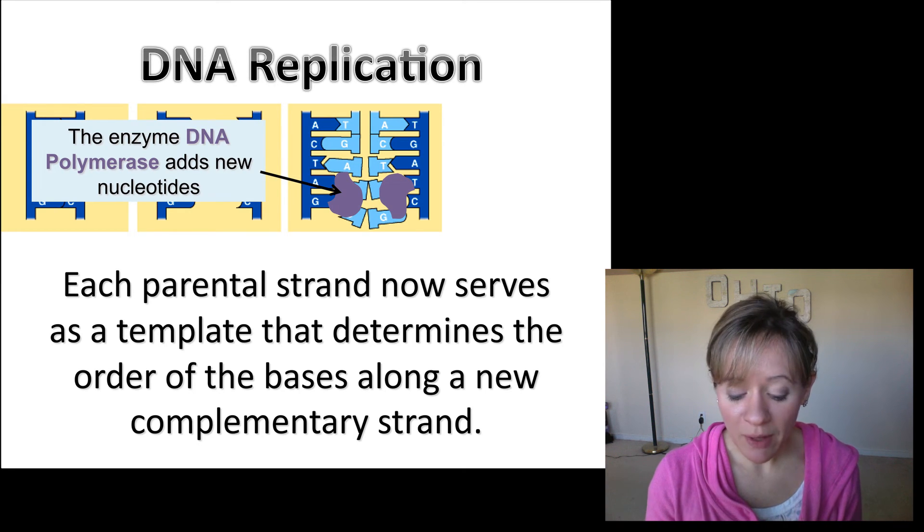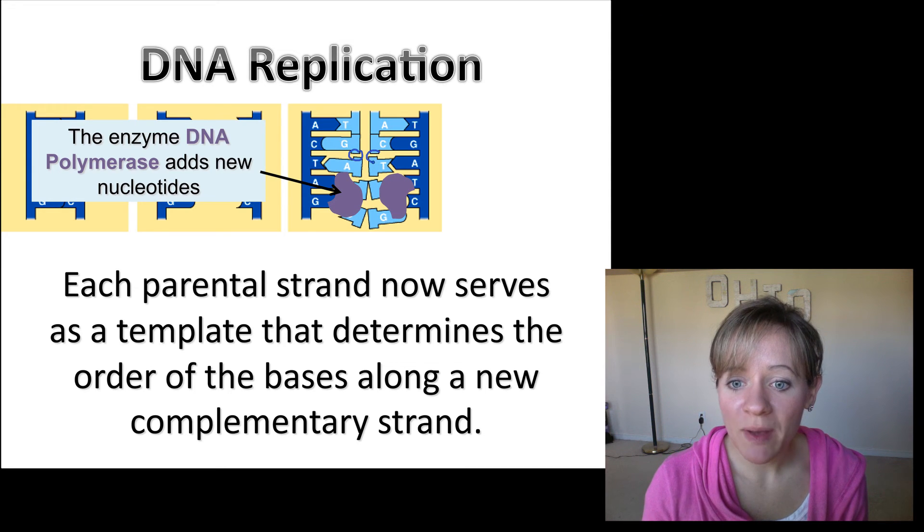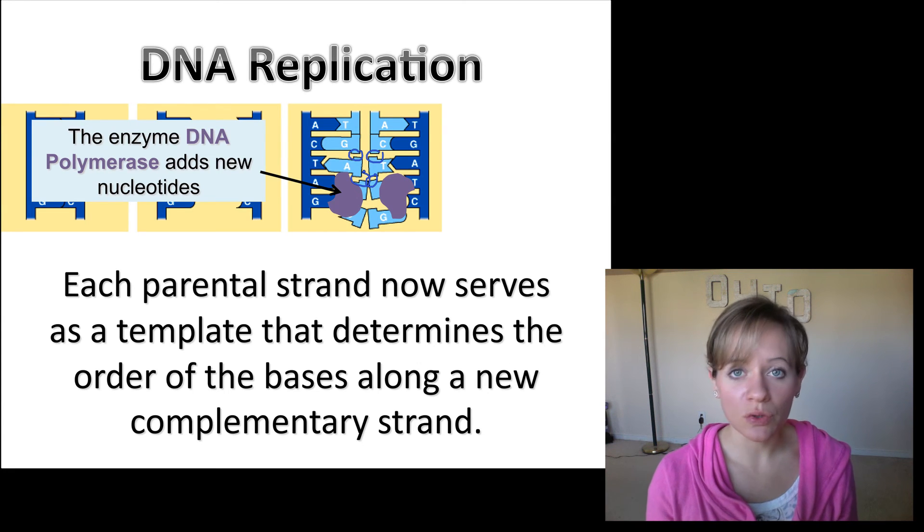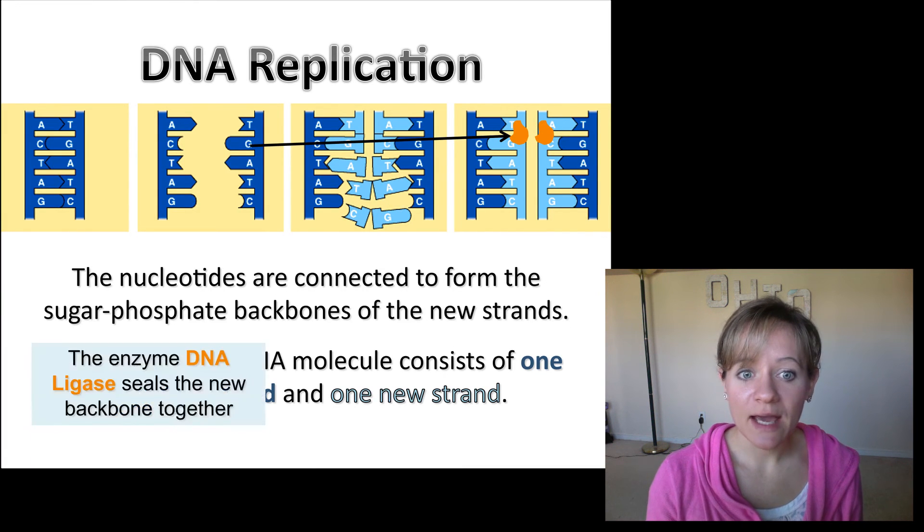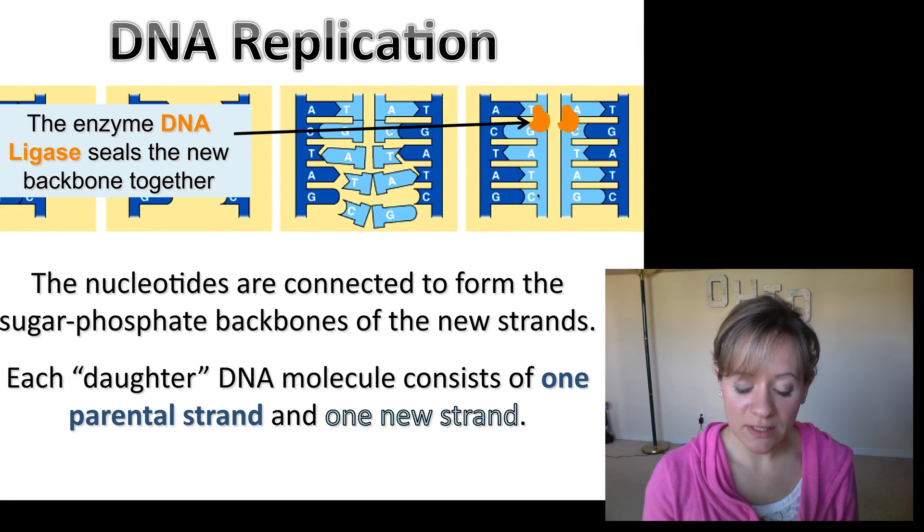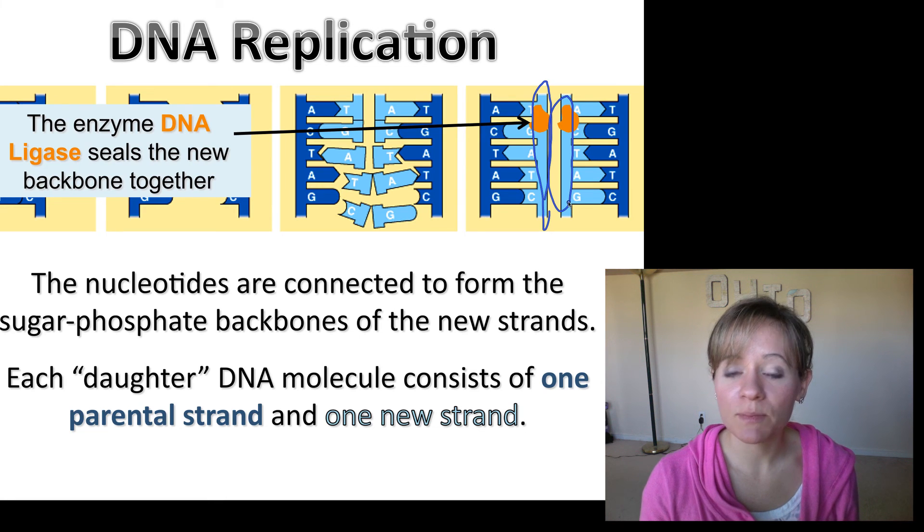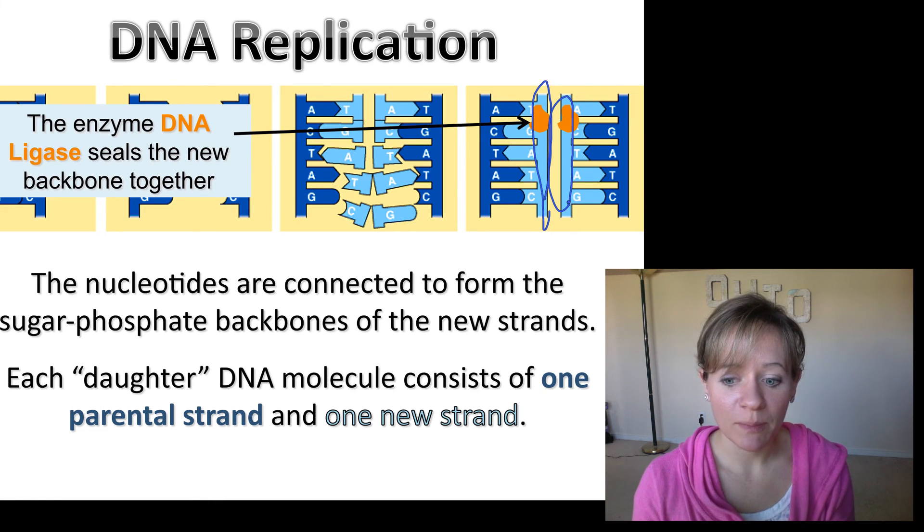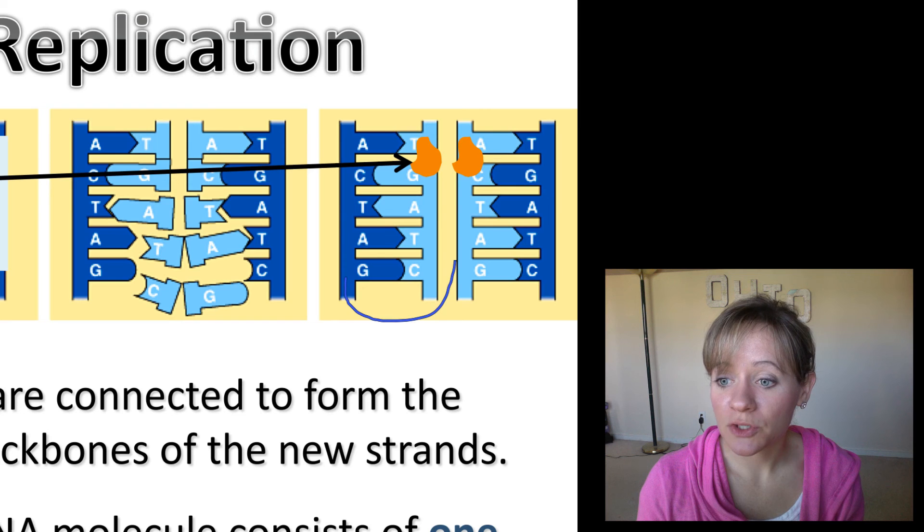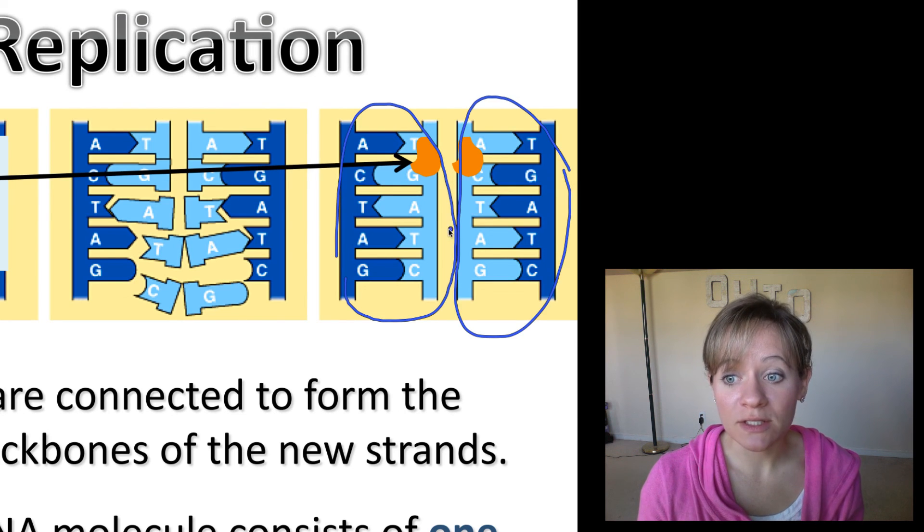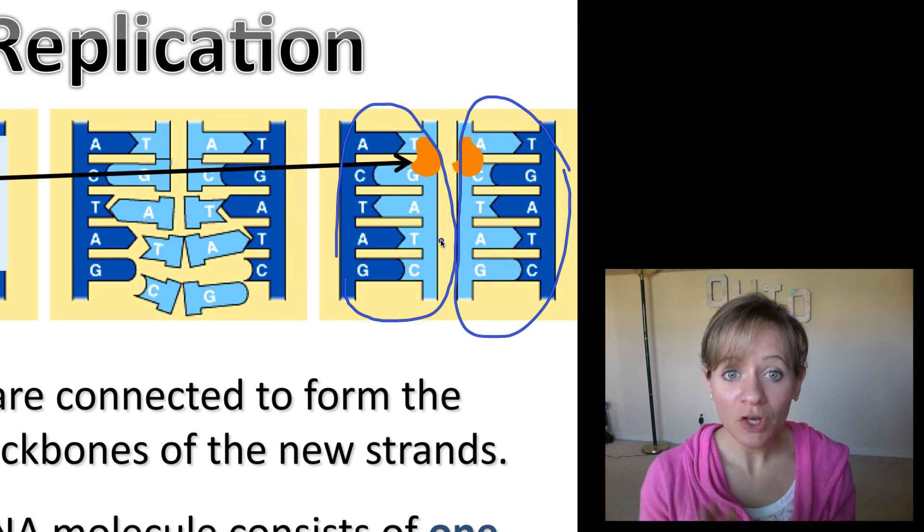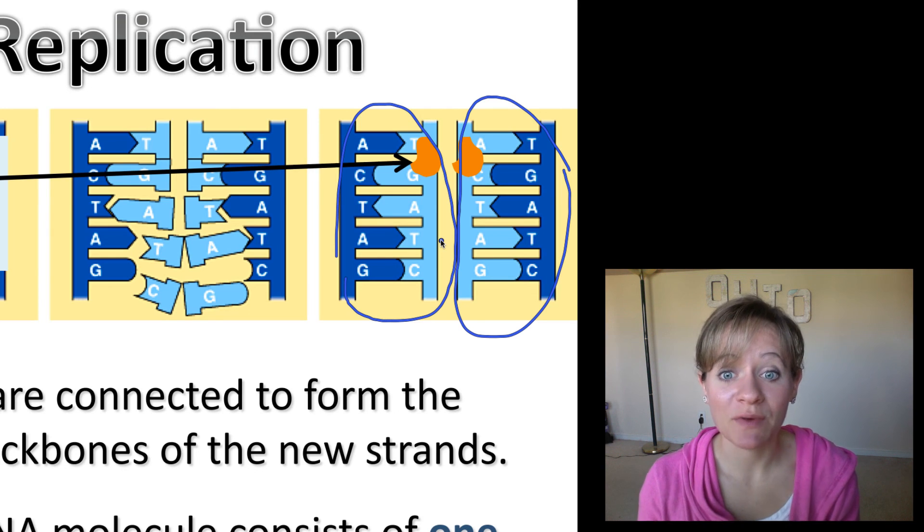Now there's one final step because what you notice here is there's sort of a space here. We need to seal that nick or glue all of these new nucleotides together. And so that's the last step, and the enzyme that does that is DNA ligase. DNA ligase seals all of these nicks together. So this now forms our new sugar phosphate backbone. And now what we see is that each new daughter DNA molecule, so here's one molecule and here's the second molecule, and each one is composed of a parental strand in dark blue and a new strand in light blue.